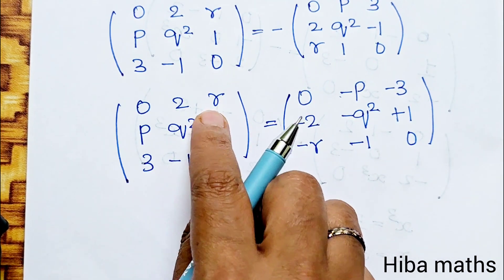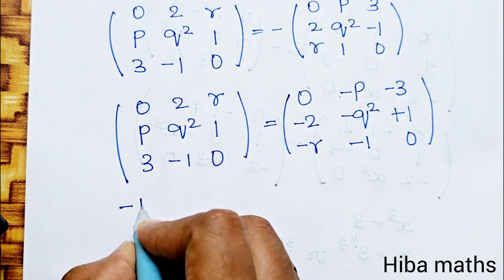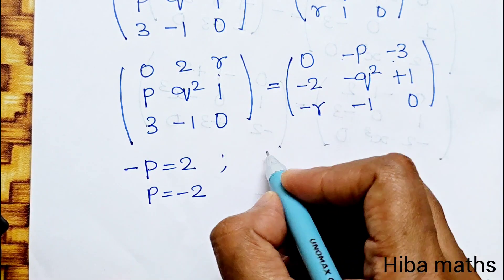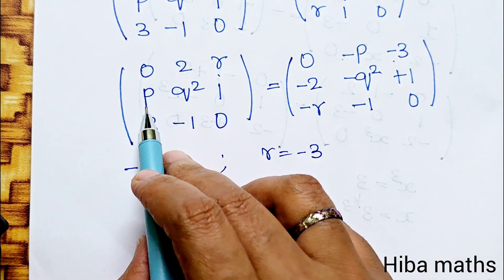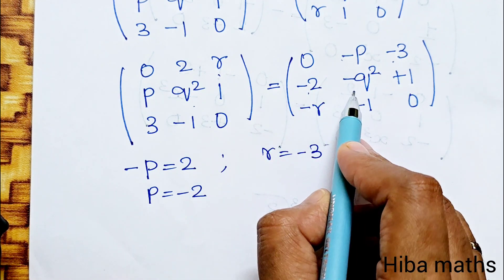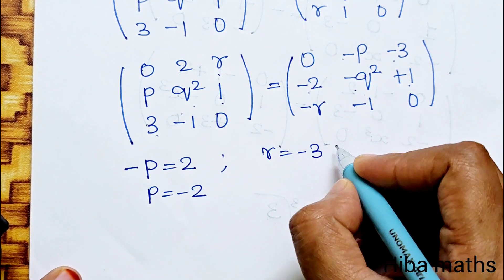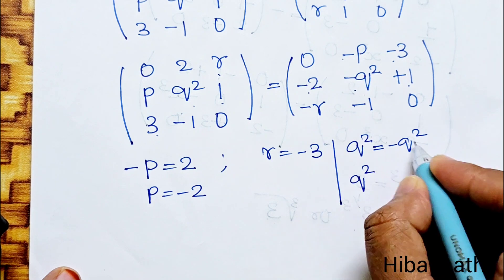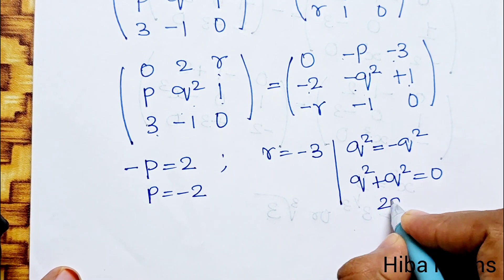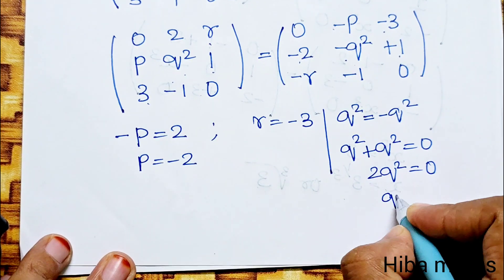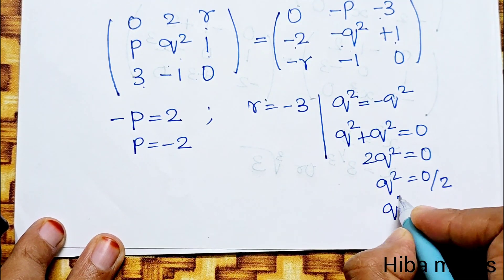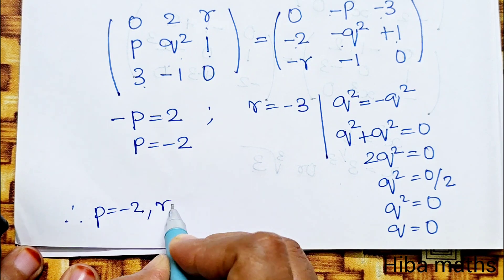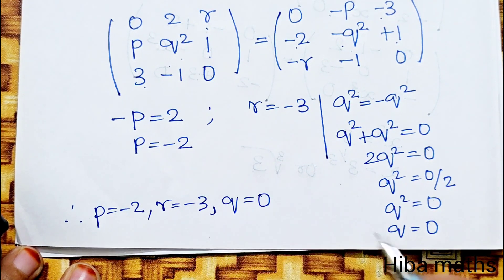Comparing B transpose with minus B: minus p equals 2, therefore p equals minus 2. r equals minus 3 directly. For q: q² plus q² equals 0, so 2q² equals 0, q² equals 0, therefore q equals 0. Solution: p = -2, r = -3, q = 0.